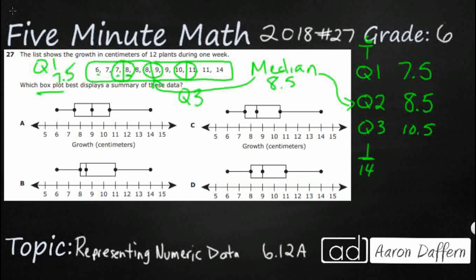So let's look at our options. First, do all of our answer choices have 6 and 14? Yes — A, B, C, and D all show 6 and 14, so they all get the range correct. Now let's check the first quartile at 7.5 — that's the left side of the box. Option A shows 7.5 — that looks good. Option B puts the first quartile at 8 — that's incorrect. Option C shows 7.5 — that's good. Option D puts it at 8 — that's incorrect. Now let's check the median at 8.5: Option A is correct, Option C is correct. Comparing further, our answer is C.